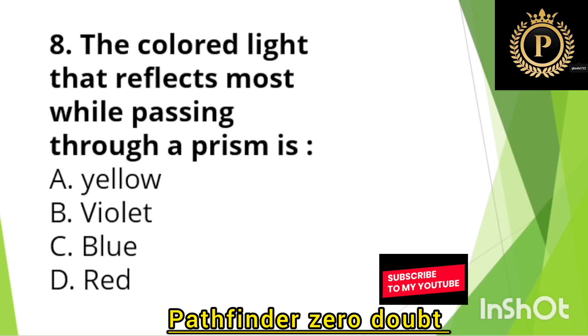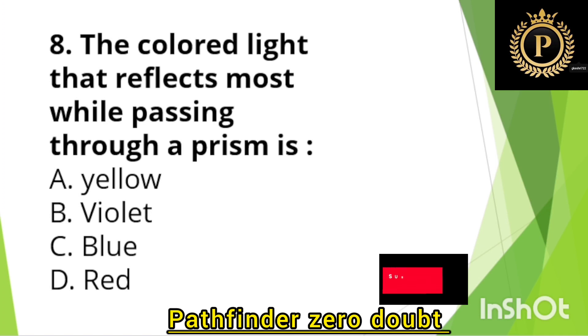The colored light that refracts most while passing through a prism is — Option B: Violet.